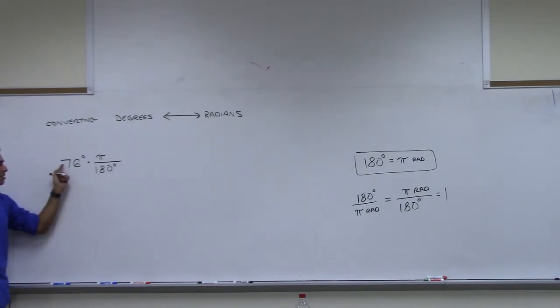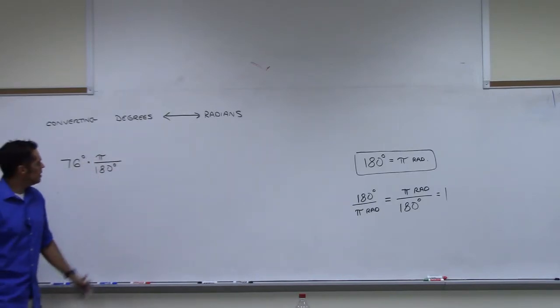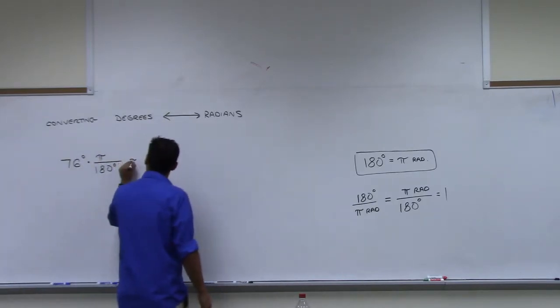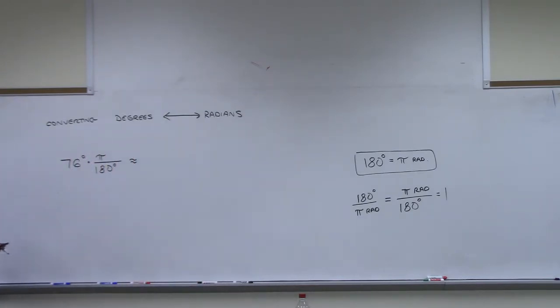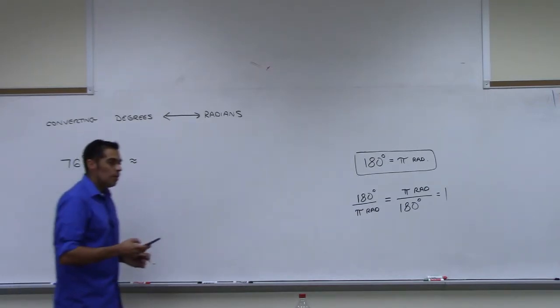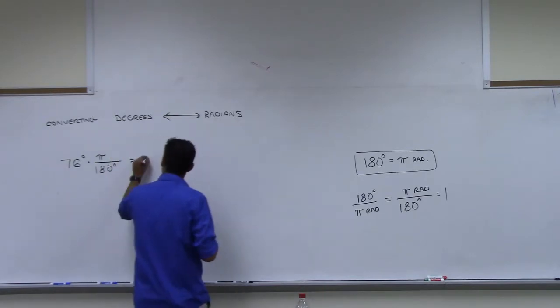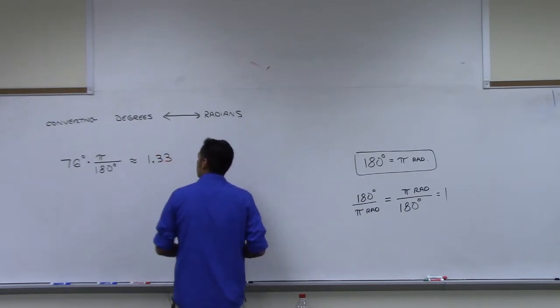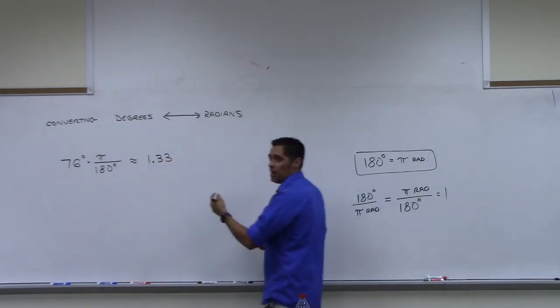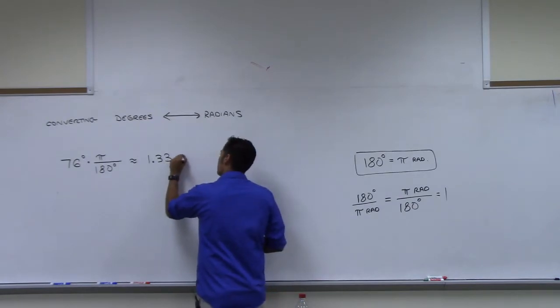Everyone see that I'm just multiplying 76 degrees times 1. It's just I'm choosing to write 1 in a clever way. And now my degrees will cancel. So on your calculator, you must do 76 times pi divided by 180. What do you get? Approximately... 1.33? About 1.33. 1.33 what? Radians. So I don't have to write radians, but I will. Radians.